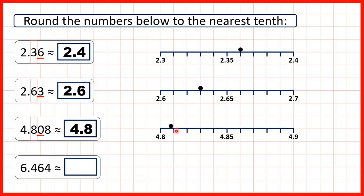We can see on a number line that 4.808 is closer to 4.8 than it is to 4.9. So we're rounding down. We can also see on this number line that 4.808 is between 4.8 and 4.81.